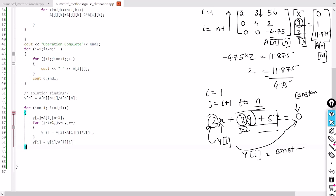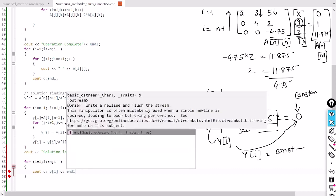Here we are going to print the solution. C out solution is. For printing we will utilize one for loop: for i equal to 1, i less than or equal to n, i++. C out y_i.